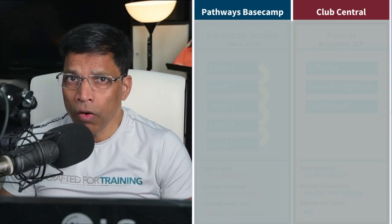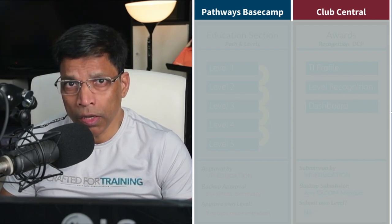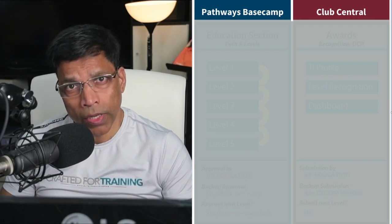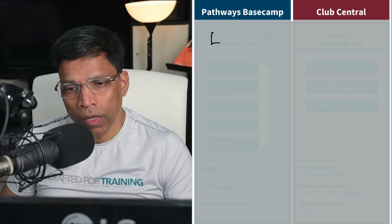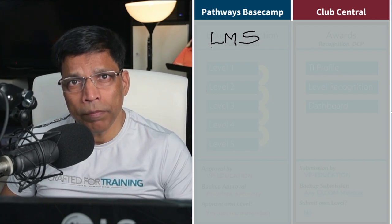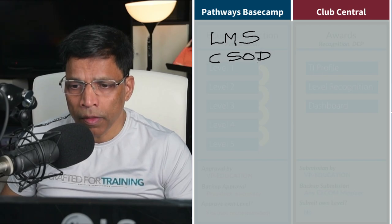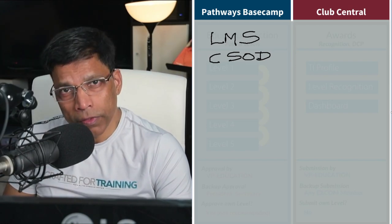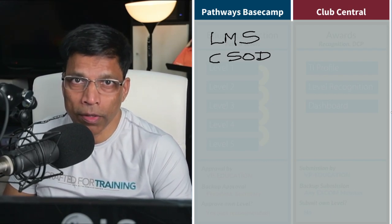Now that we understand how to navigate Base Camp, I would like to cover these two systems we encounter in Toastmasters: Base Camp and Club Central. Even though we access them from the same place, they are actually two different systems. Base Camp is what we call an LMS — a Learning Management System — and this system is run by a company called CSOD, Cornerstone On Demand. Cornerstone On Demand is a company that focuses on corporate training, and for this reason you might find many references in Base Camp to 'employees' even though we are members.